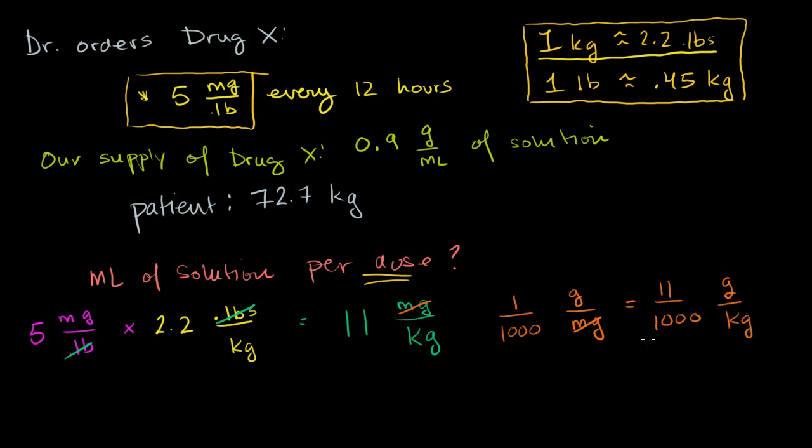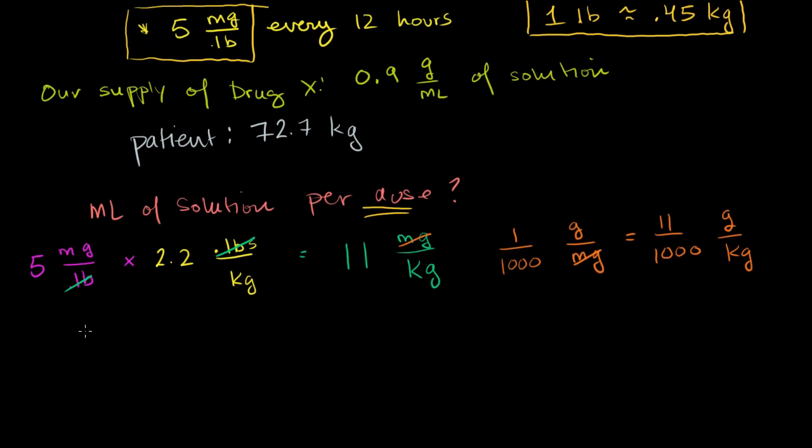So now we have everything in terms of grams, but we want it in terms of milliliters. The question is, how many milliliters of solution per dose? So let me go down here on this line right here. So we had this result. We have 11 over 1,000 grams of drug X per kilogram. This is really just a rewritten this dosage information in different units. And let's see how much solution we need per kilogram. So what I want, I want to cancel out the grams here and have a milliliters there. So to cancel out that grams, I'm going to have to have a gram in the denominator, and a milliliter in the numerator.